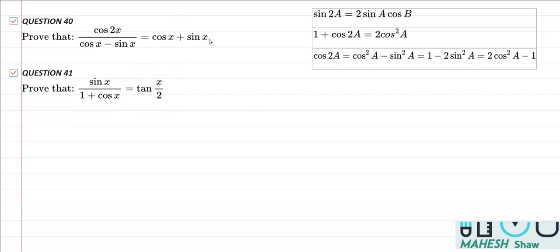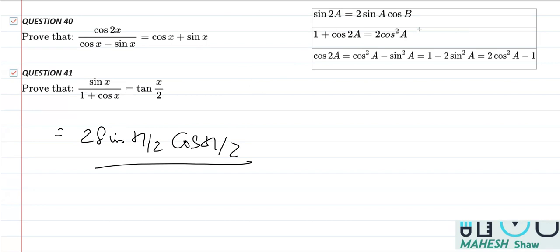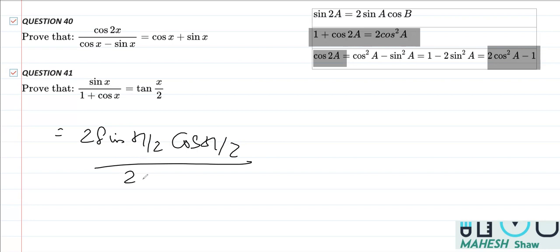Applying the identity sin 2a equals 2 sin a cos a, I can replace the LHS using the half angle property: x becomes x by 2 as 2a becomes a. So this gives us 2 sin(x/2) cos(x/2) divided by 1 plus cos x. Now 1 plus cos x comes from the identity 1 plus cos 2a equals 2 cos squared a, which means x turns out to be x by 2. So I can replace 1 plus cos x as 2 cos squared(x/2).